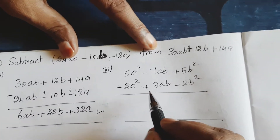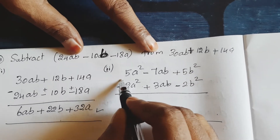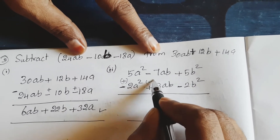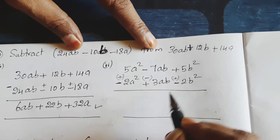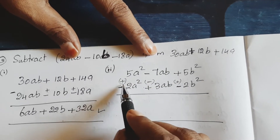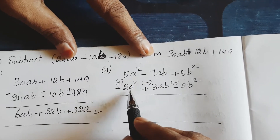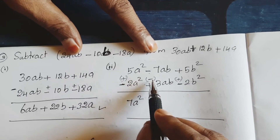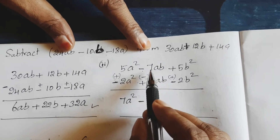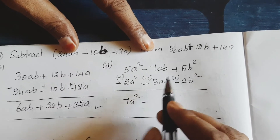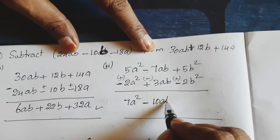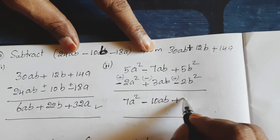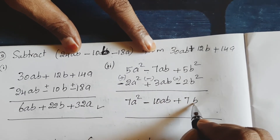Next question: change the sign — positive becomes negative, negative becomes positive. Then: 5 plus 2 gives 7a square. Minus and minus gives minus sign: 7 plus 3 gives minus 10ab. Plus and plus gives plus sign: 5 plus 2 gives plus 7b square. So the answer is 7a square minus 10ab plus 7b square.